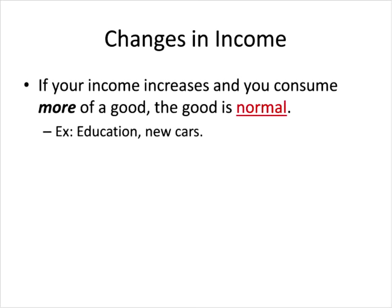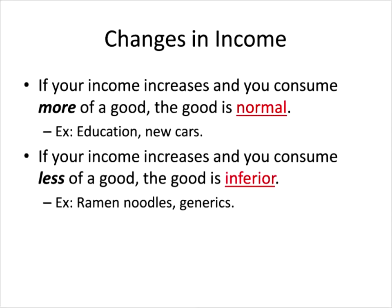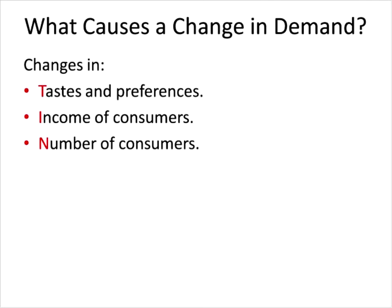If your income increases and you consume more of a good, then that good is called a normal good. However, if your income increases and you consume less of a good, we call that an inferior good. Ramen noodles and generic brand foods are classic examples — things you might wish you didn't have to buy if you could afford something better. Changes in income can cause us to consume a larger or smaller quantity of a good at any given price.